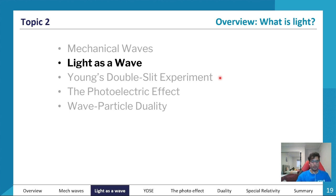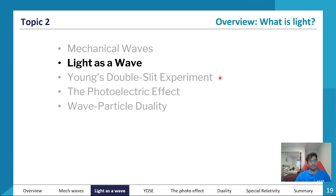Just a quick history lesson: in the 1800s and 1900s we didn't know much about light. Back in the day it was assumed that light is a particle, but there was also some evidence for light being a wave. So there were lots of debates in the science community about whether light is really a wave or a particle.